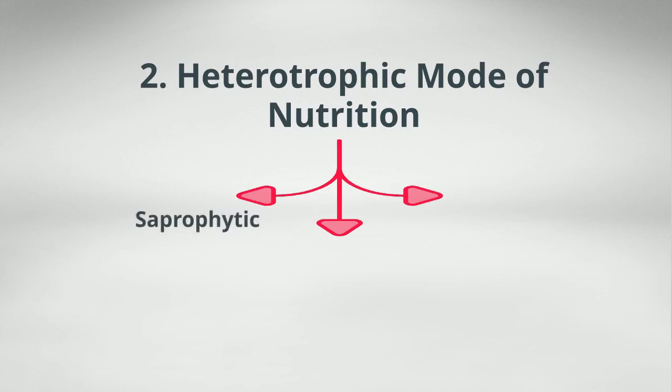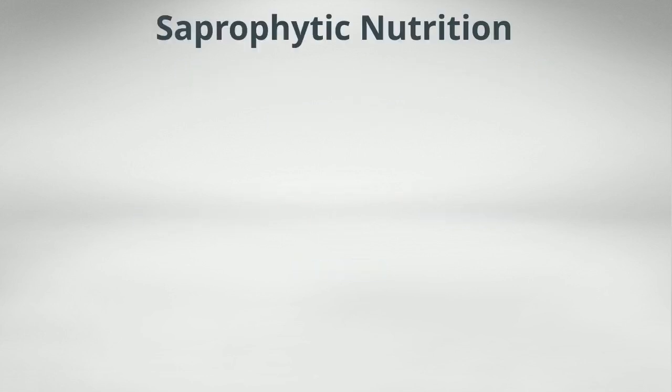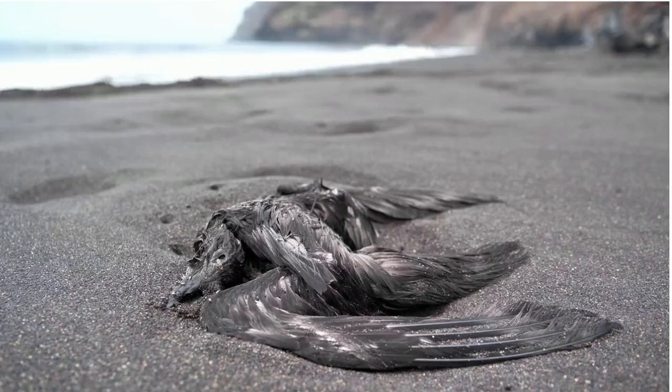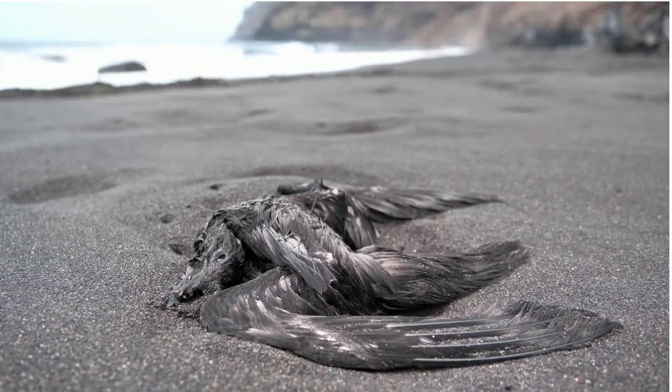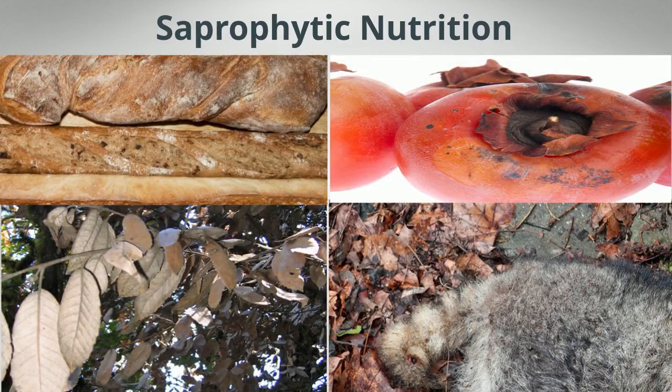Saprophytic Nutrition. The term sapro means rotten. In saprophytic nutrition, organisms obtain their food from dead and decaying matter. For example, bacteria and fungi follow this type of nutrition. They derive their food from rotten bread, rotten leaves, rotten wood, rotten fruits, etc.